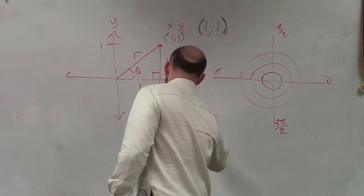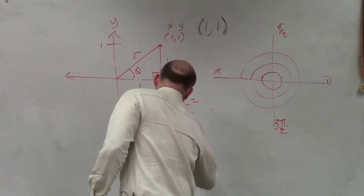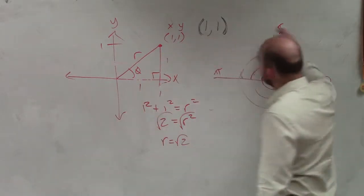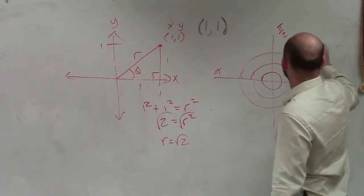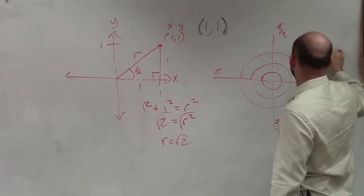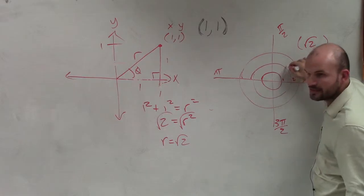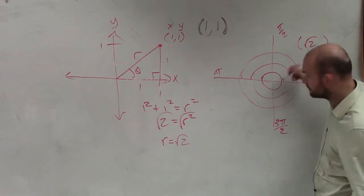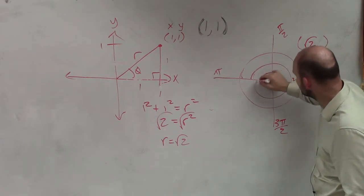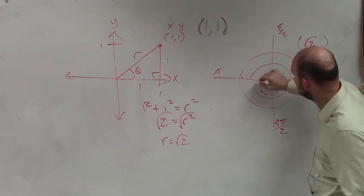2 equals r squared, square root, square root. r equals the square root of 2. So when I want to convert this, I'm going to have r is the square root of 2. Now notice, if that's 1, that's 2, that's 3, the square root of 2 is going to be somewhere in between 1 and 2, right? Whatever it might be. So it's going to be somewhere around this little makeshift ring in there.